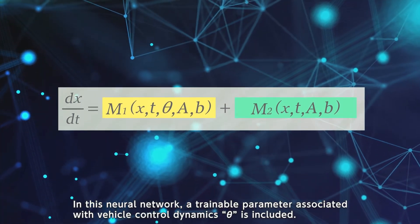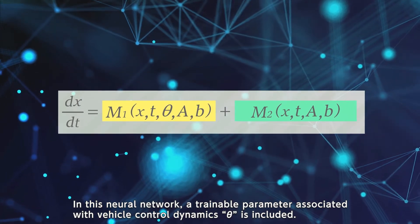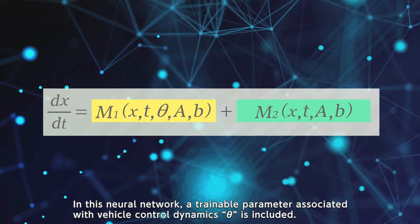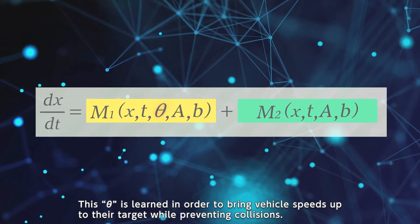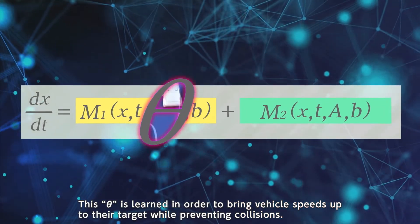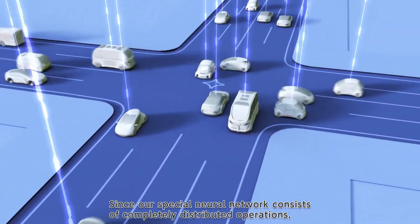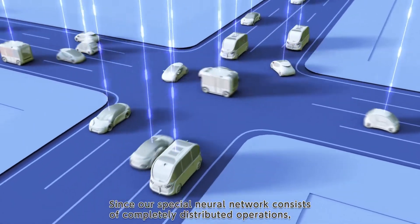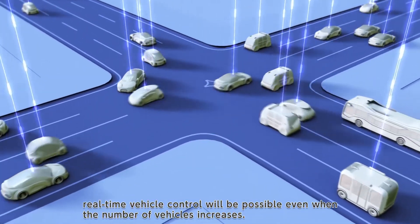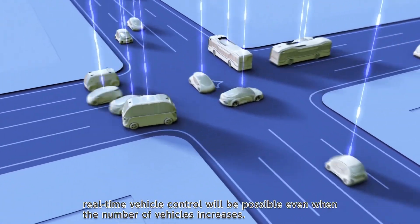In this neural network, a trainable parameter associated with vehicle control dynamics theta is included. This theta is learned in order to bring vehicle speeds up to their target while preventing collisions. Since our special neural network consists of completely distributed operations, real-time vehicle control will be possible even when the number of vehicles increases.